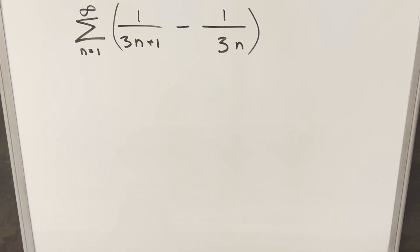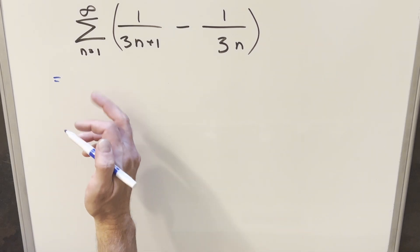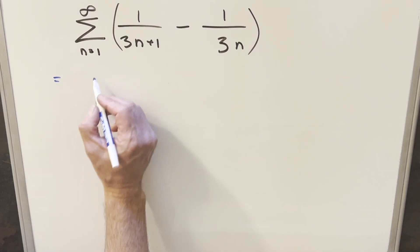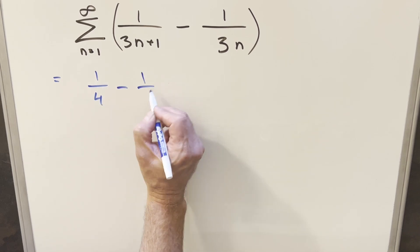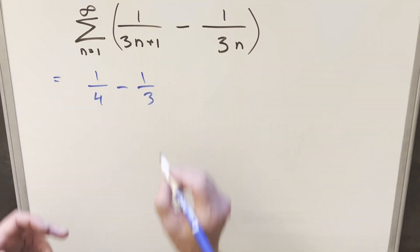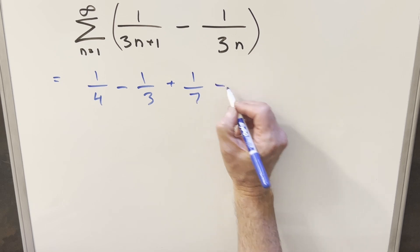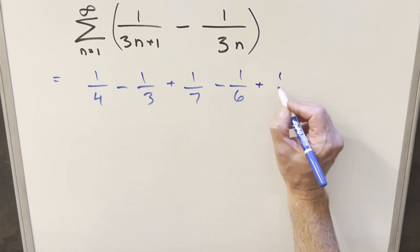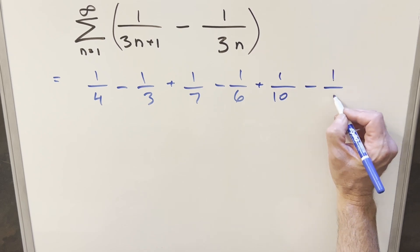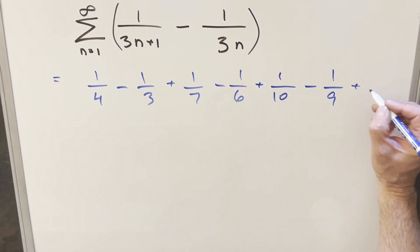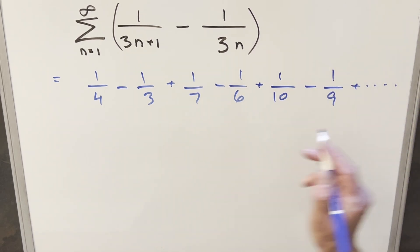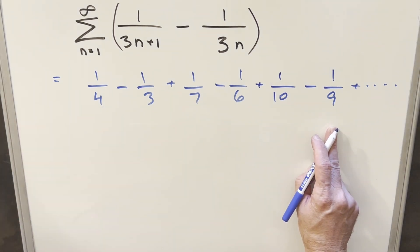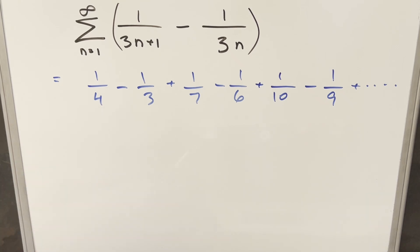Whenever I see something like this, my first thought is maybe it's a telescoping series. So let's just plug in terms starting with n equals 1: that gives 1/4 minus 1/3. Plugging in 2, we have 1/7 minus 1/6. Plugging in 3, we get 1/10 minus 1/9. The problem is we're not seeing any cancellation, so this is actually not telescoping, and we won't get any simplification from cancellation.